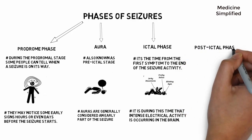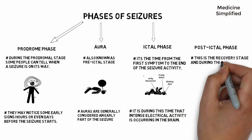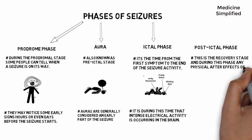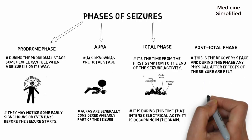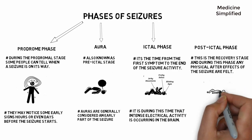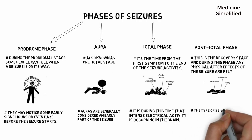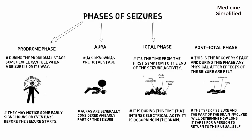The fourth and final phase is the post-ictal phase. This is the recovery stage, and during this phase any physical after-effects of the seizure are resolved. The type of seizure and the part of the brain involved will determine how long it takes for a person to return to their usual self.